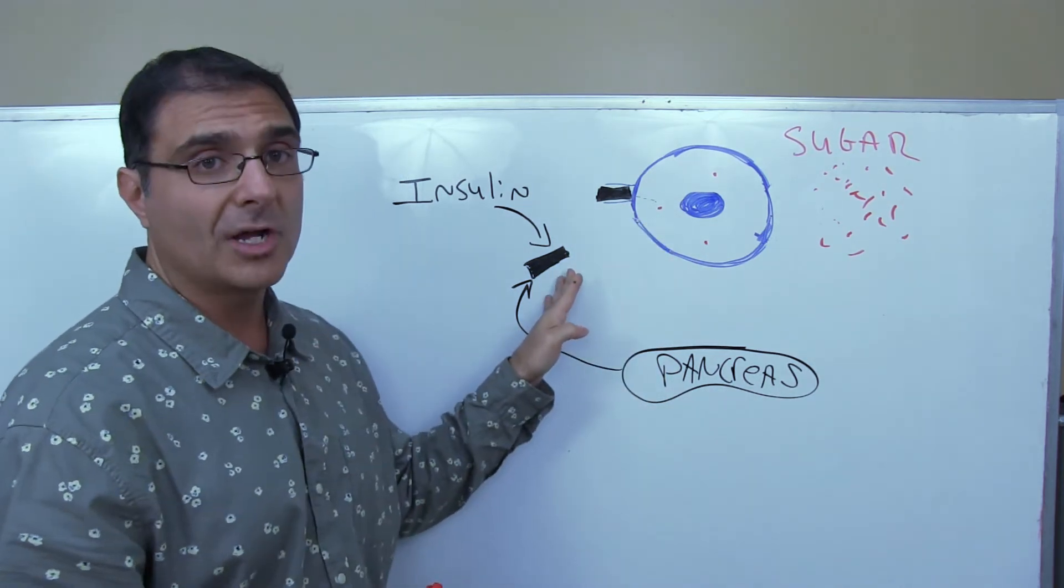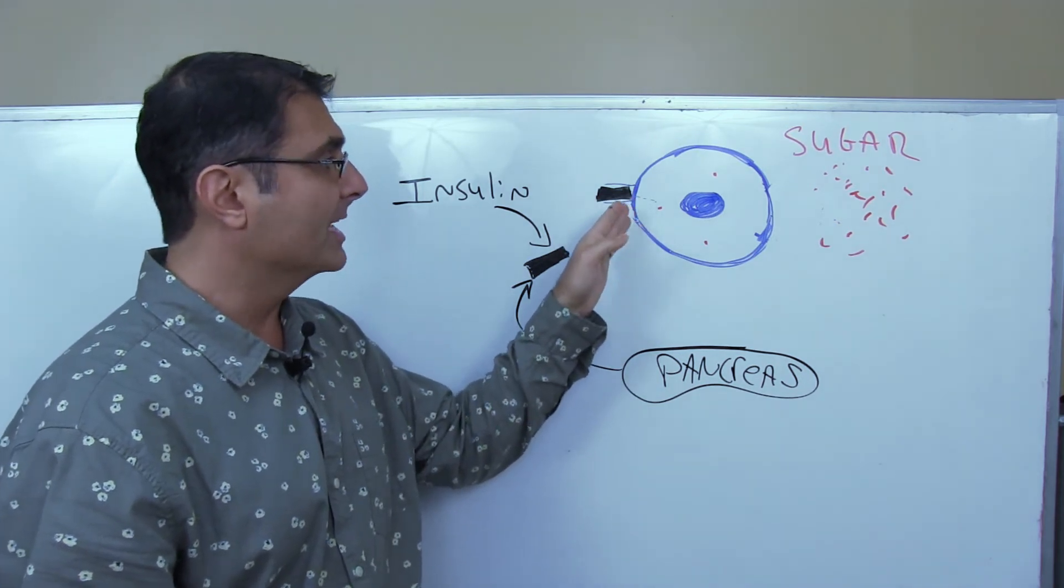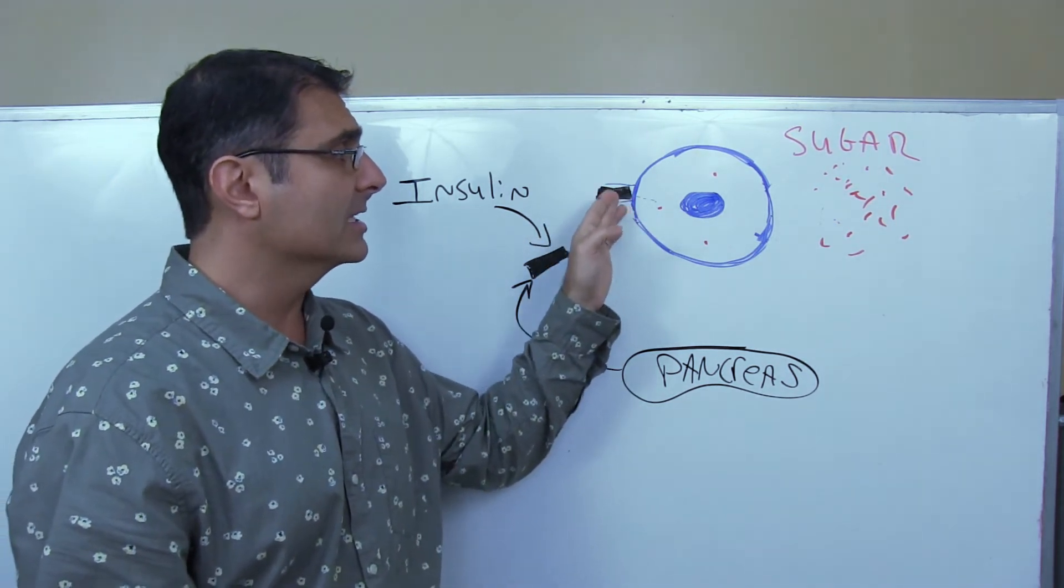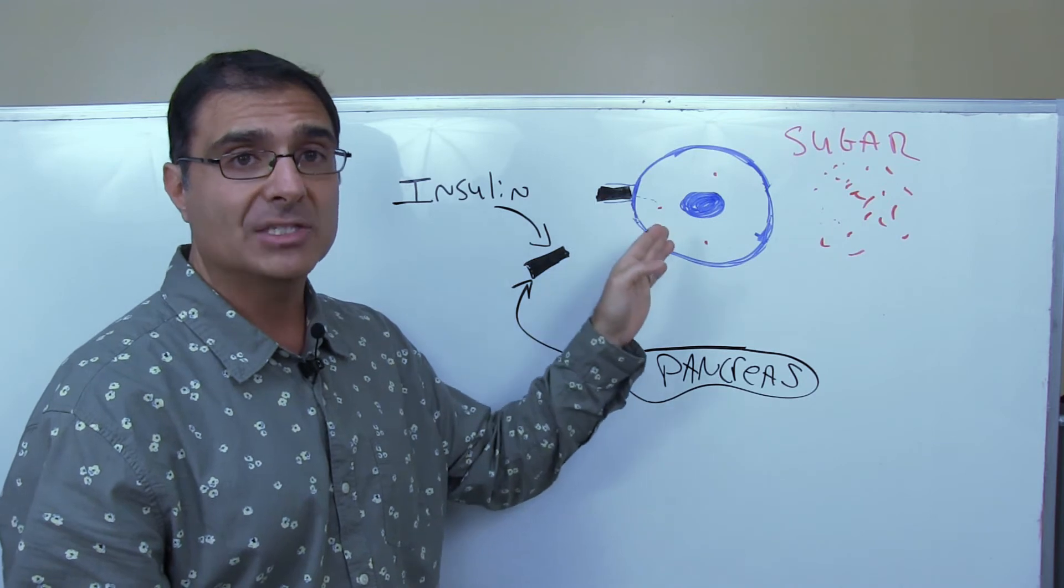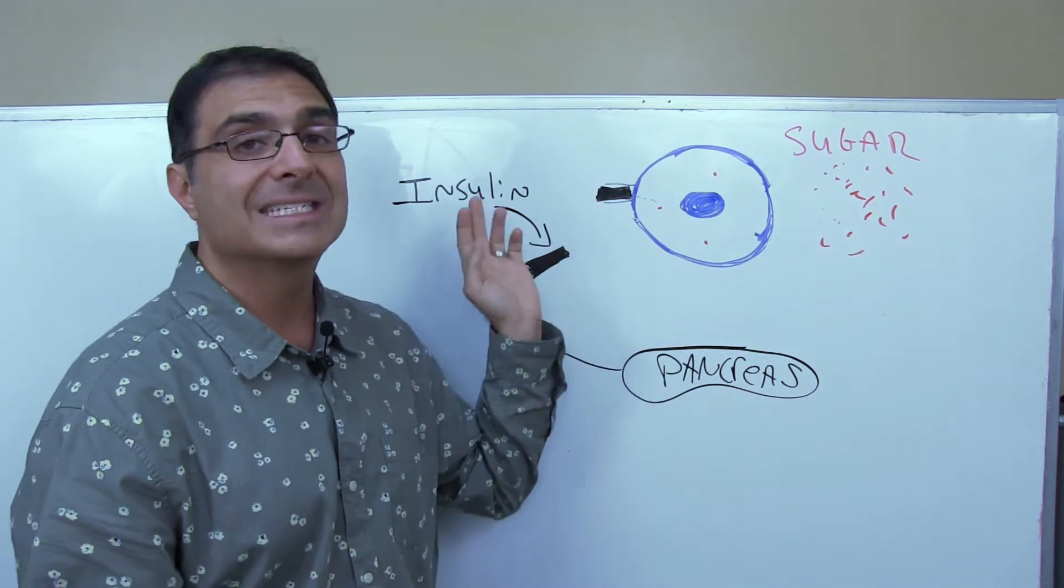Type 2 diabetics is not an insulin production problem. They're making plenty of insulin. It's a receptor problem. It's the receptor. The insulin is telling the cell, it's giving the message, it's telling the cell to open up and absorb the sugar, but the receptor is damaged.